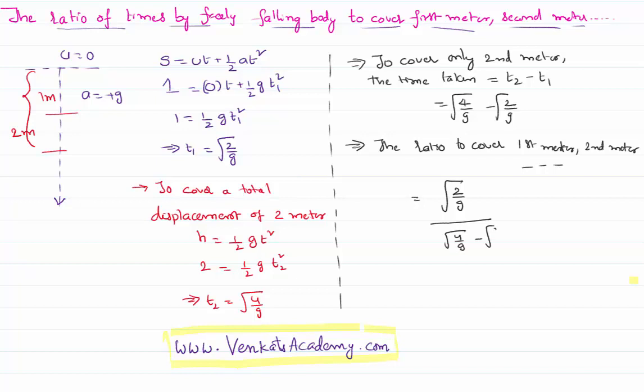Root 4 by g minus root 2 by g. So if I have taken that root 2 by g as common in the denominator, what I will be getting is root 2 minus root 1. This can be cancelled, so the ratio is 1 is to root 2 minus root 1.